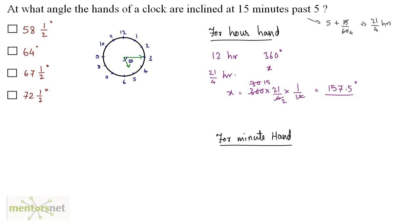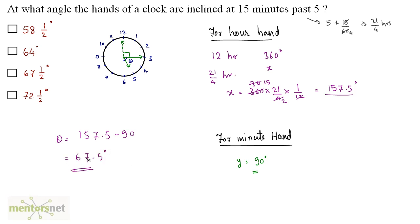What will be the angle subtended by the minute hand? There's no need to calculate it — you can tell just by looking at it. When the minute hand travels 15 minutes from its starting position, it traces a right angle, so y equals 90 degrees. Therefore theta equals the angle traced by the hour hand minus the angle traced by the minute hand: 157.5 minus 90, which equals 67.5 degrees, or 67 and 1/2 degrees. So option C is the correct answer.